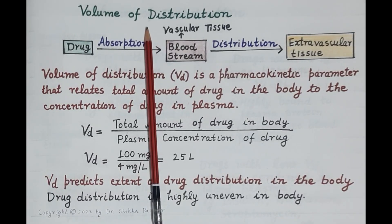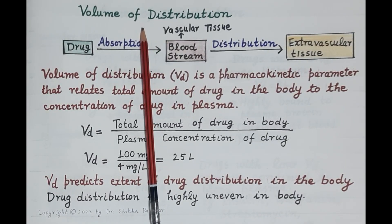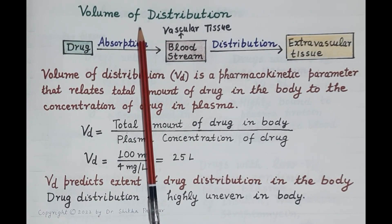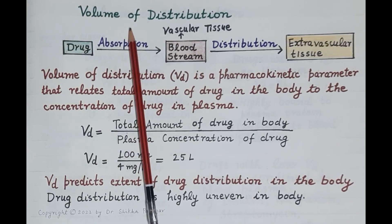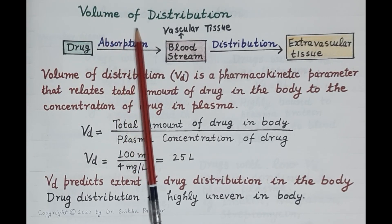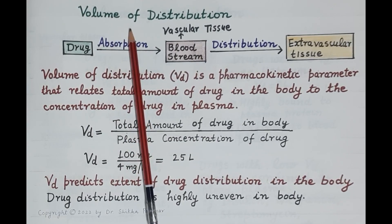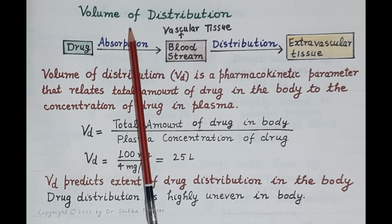Hello students. As we all know, pharmacokinetics is a study of administration, distribution, metabolism, and excretion of a drug by the body. In this video, we will try to understand the concept of volume of distribution. This video is the sixth in the series of videos on pharmacokinetics. Volume of distribution determines the extent of drug distribution in the body.